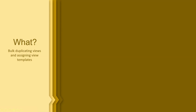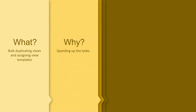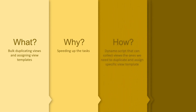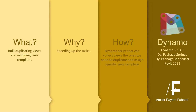Hello everyone. In this tutorial, I am going to show you how to duplicate bulk views and assign view templates on them using Dynamo to speed up the tasks. We collect views to duplicate them and assign specific view templates. I am going to use Dynamo 2.13.1 and you need to have Dynamo packages Springs and Modelical installed. I am going to use Revit 2023.